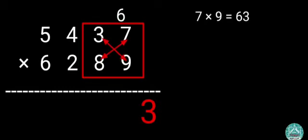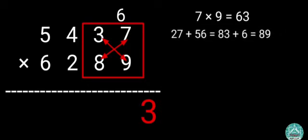Step 2: Multiply 3 by 9 and 8 by 7, then add. 27 plus 56 equals 83. Then add 83 and 6 that's carried forward. 83 plus 6 equals 89. Write 9 before 3 and carry forward 8.